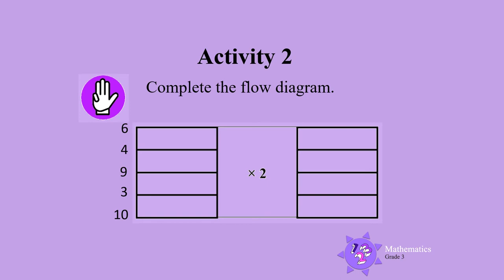What do we have to do? Do you see that we have to multiply by 2? Let's start with 6. 6 times 2 is 12. 4 times 2 is 8. 9 times 2 is 18. 3 times 2 is 6 and 10 times 2 is 20.